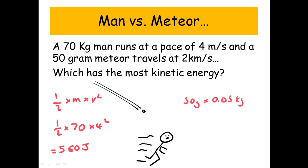However for the meteor, first don't forget we need to convert our mass into kilograms, so it's 0.05 kilograms. And the 2 kilometers per second, well that's 2,000 meters per second. So let's put that in our formula, half mv squared.